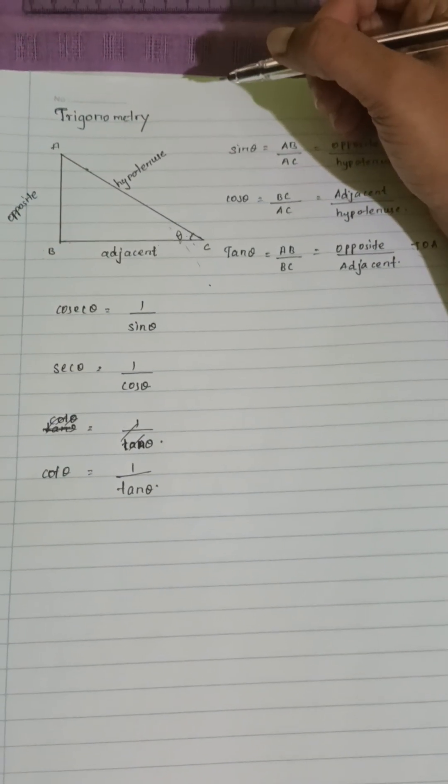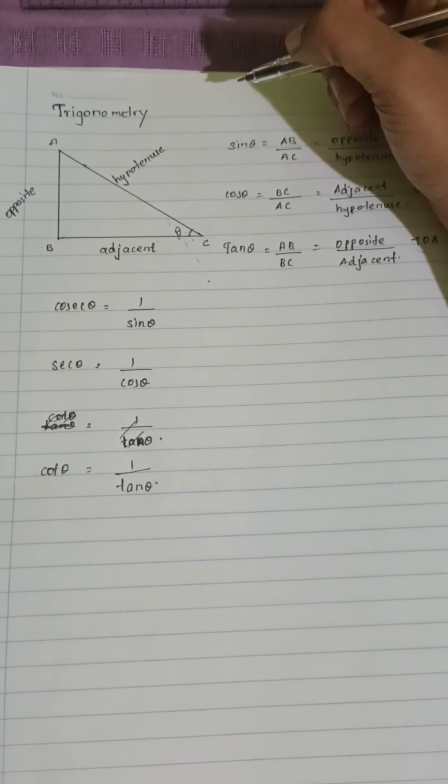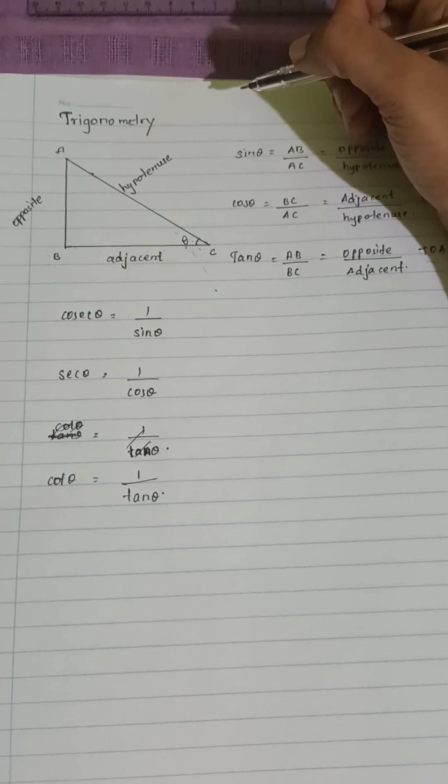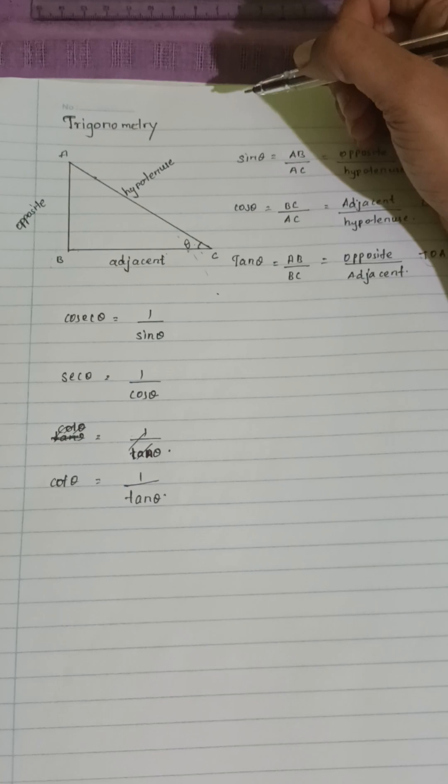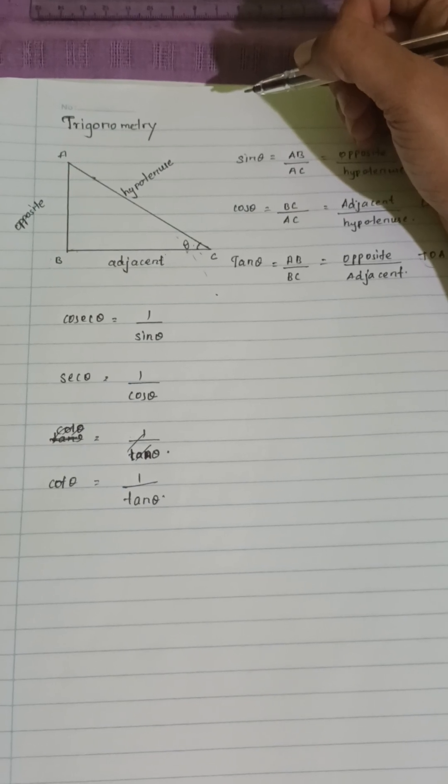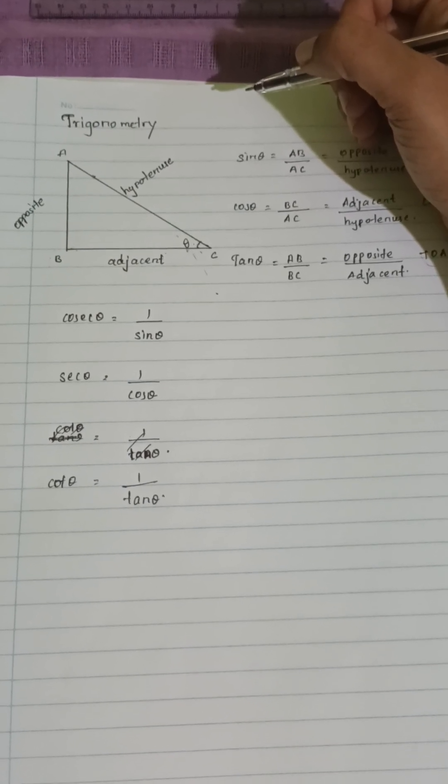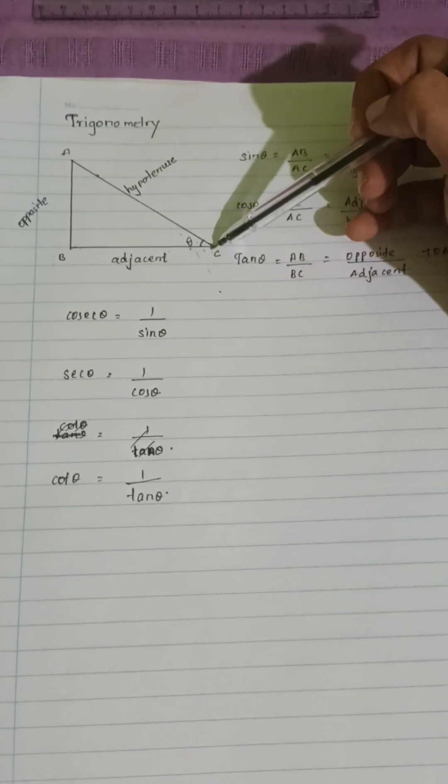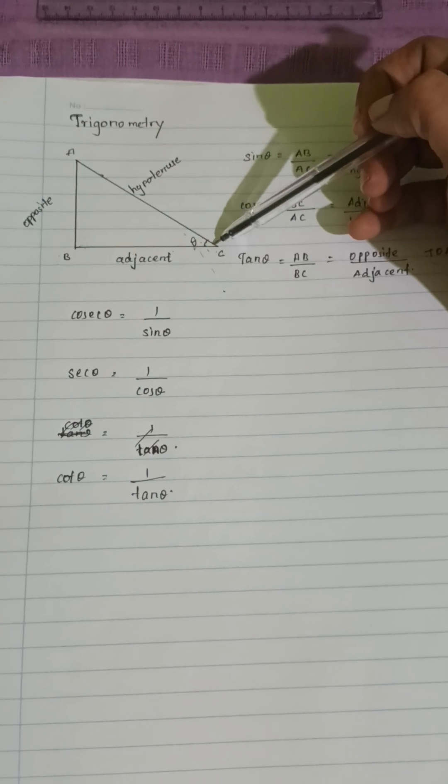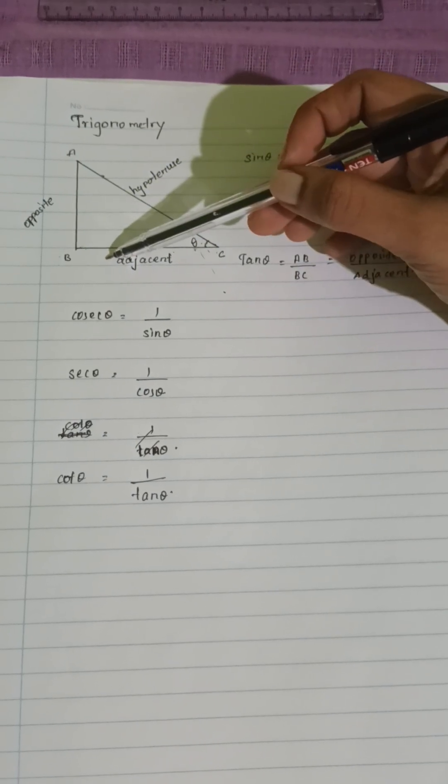This is about trigonometric basics - understanding how the angles and sides of a right angle triangle relate to each other using trigonometric ratios. Consider triangle ABC with a right angle at point B and angle theta at point C.